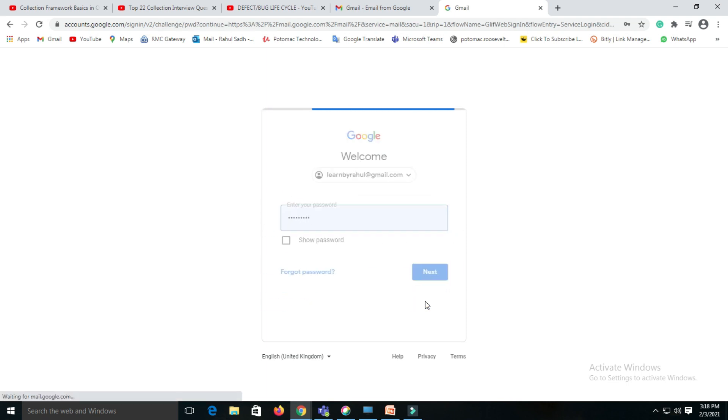Suppose we have the requirement for the login feature of Gmail application. If the next button is not appearing, this is called a defect. Right now it is showing, but after development, if the next button is not showing or is disabled, we can say it is a defect. Why? Because the customer requirement is to login with correct username and password, then click next and be logged in. If that's not available, this is a defect.